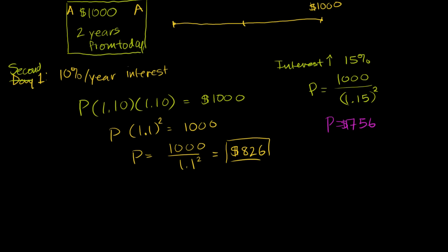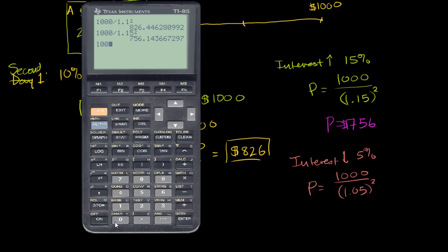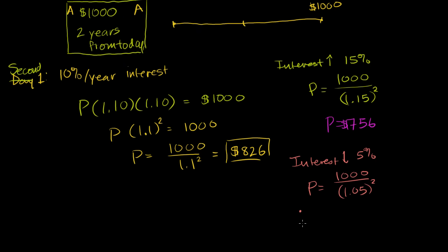Now, just to finish up the argument, what happens if interest rates go down? Let's say the expected interest rate on this type of risk goes down. Let's say it's now 5%. What is someone willing to pay for this zero coupon bond? Well, the price is, if you compound it two years by 1.05, that should equal $1,000. Or the price equals $1,000 divided by two years of compounding at 5%. Get the calculator out again. We get $1,000 divided by 1.05 squared equals $907. So all of a sudden, the price is now $907.